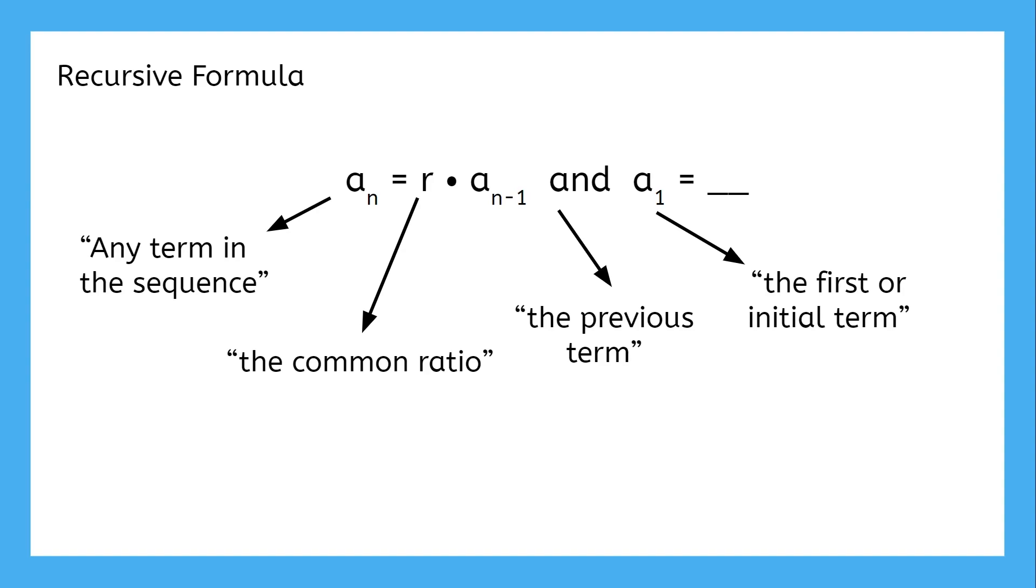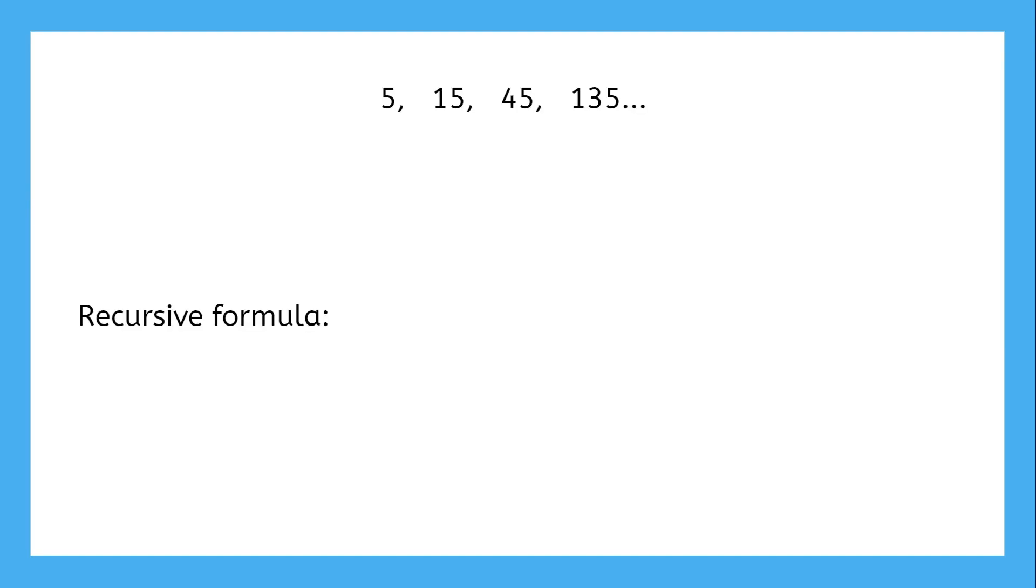For this sequence: 5, 15, 45, 135, etc., how would we write the recursive formula? First, let's take a look at what we need. a_n and a_(n-1) change based on what term we're looking at, but the first term and the common ratio will be easy to find.